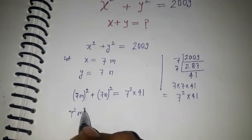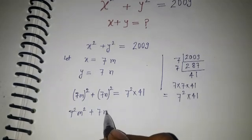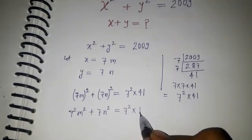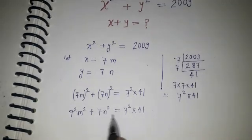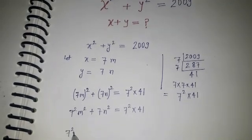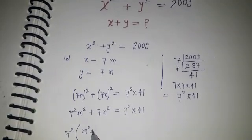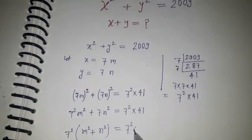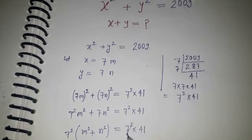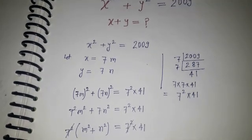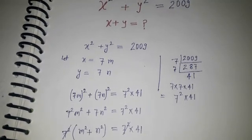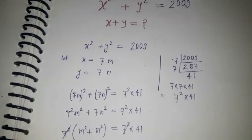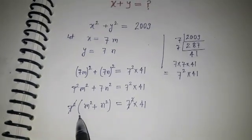Expanding: 7 squared m squared plus 7 squared n squared equals 7 squared times 41. Taking 7 squared as common on the left side gives 7 squared times (m squared plus n squared) equals 7 squared times 41. We can cancel the 7 squared from both sides.